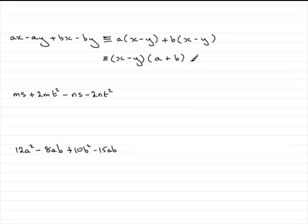This is called factorising by grouping, because what we do is group up pairs of terms.